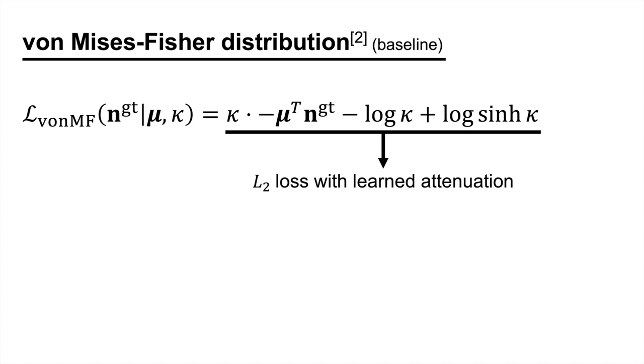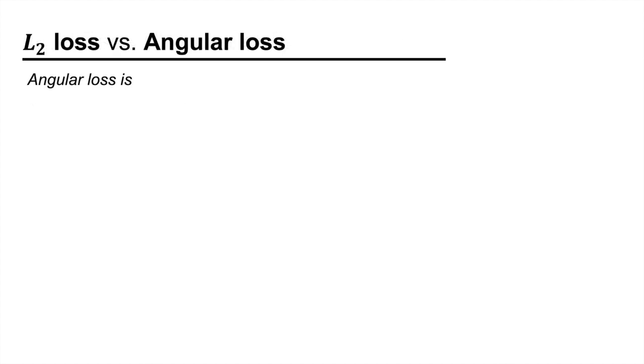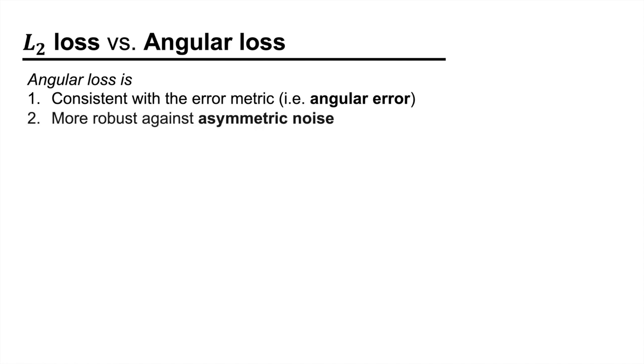However, we argue that instead of minimizing the L2, we should minimize the angular error. There are two reasons for this. Firstly, it makes the loss consistent with the error metric. Secondly, the angular loss is more robust against the asymmetric noise in the ground truth.